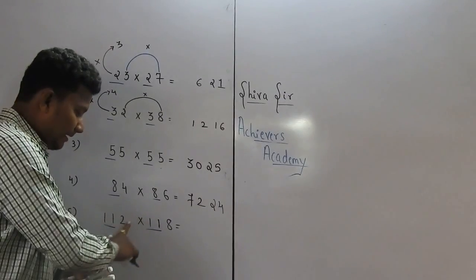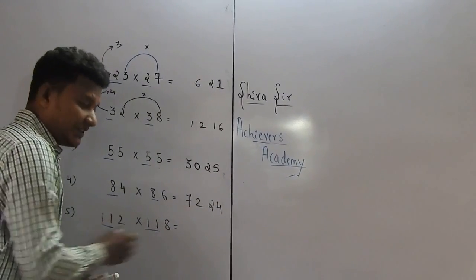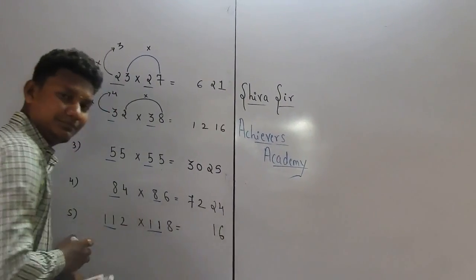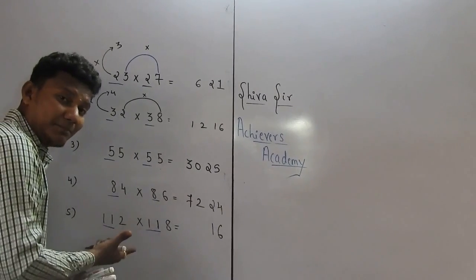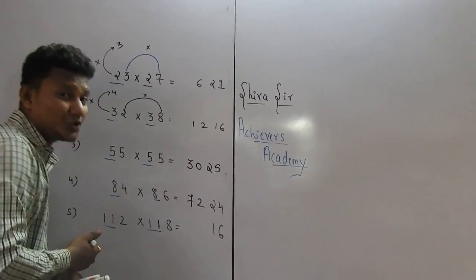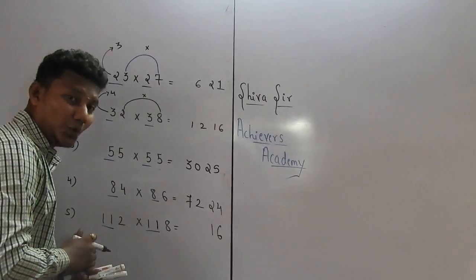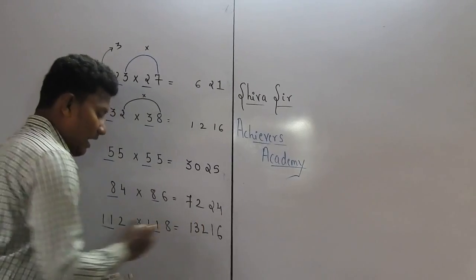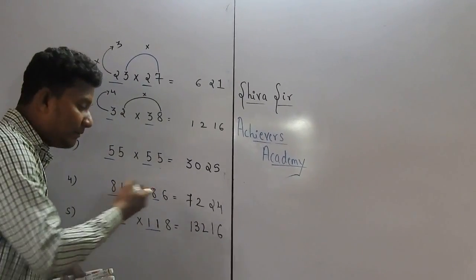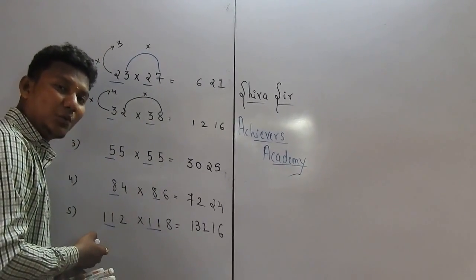Focus on the last one. 2 times 8 is 16. What is the next number after 11? It is 12. So what is 11 times 12? It is equal to 132. So we got our answer: 112 into 118 equals 13216.